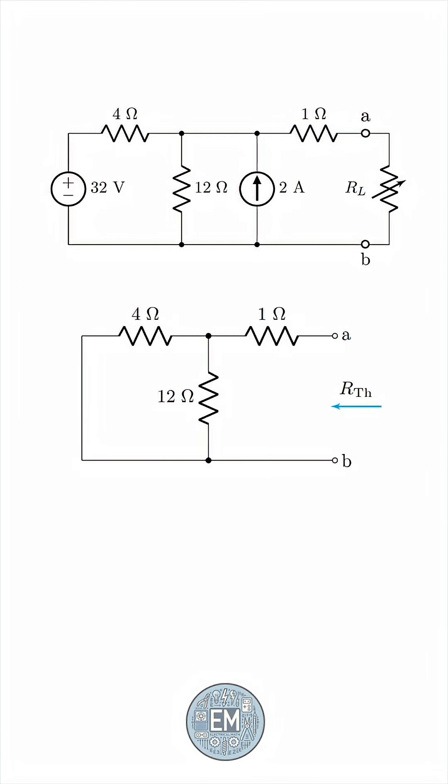It's clear that our Thevenin is the 1 ohm resistor in series with the parallel combination of the 4 and 12 ohm resistors. 4 in parallel with 12 is 3, plus 1 would be 4 ohms. So this is the Thevenin resistance.